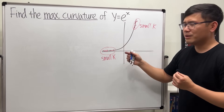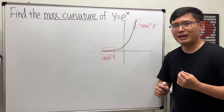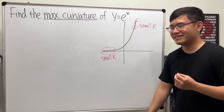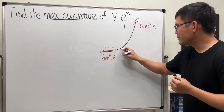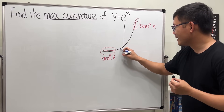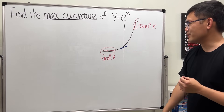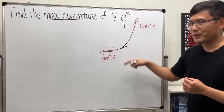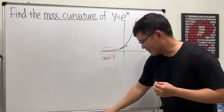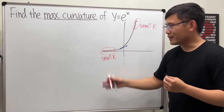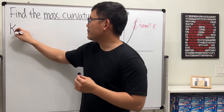It might look like it's bending quite well near zero, but don't trust the picture — we have to trust the calculus. I would like to tell you it's actually somewhere here, a little bit to the left of zero. How do I know? Because I did this problem already. Now let's do the math.